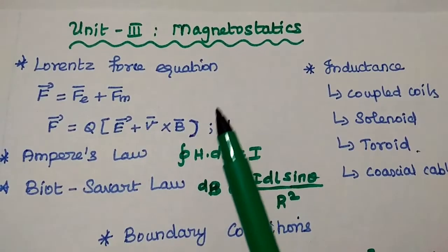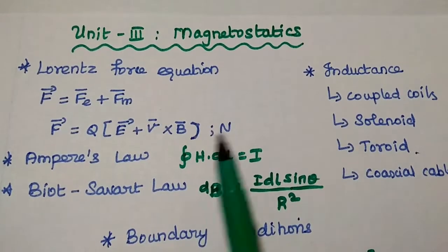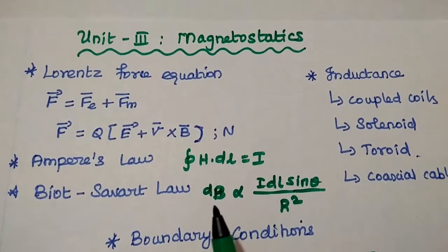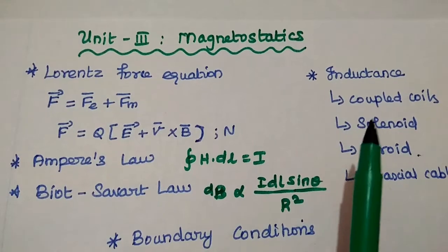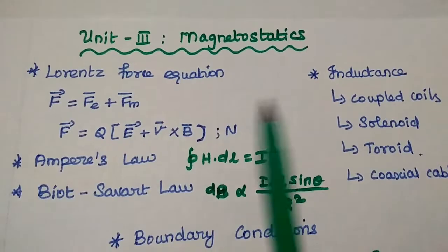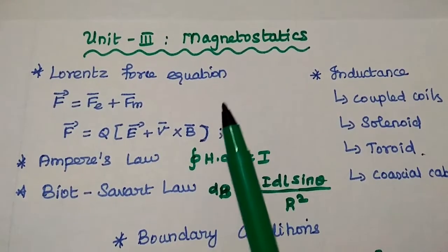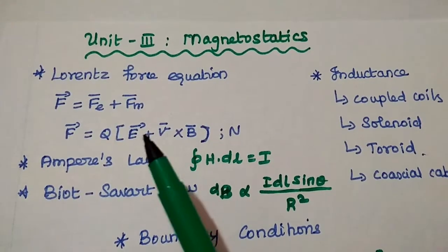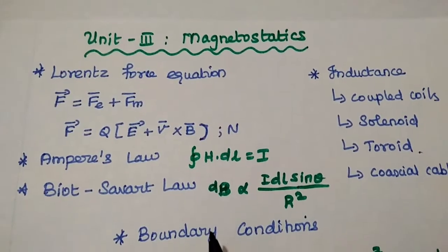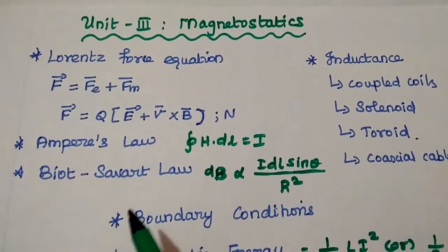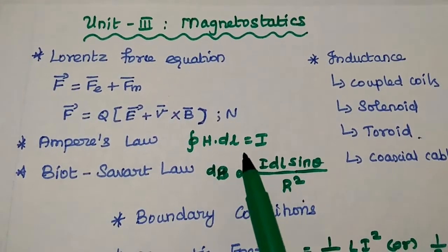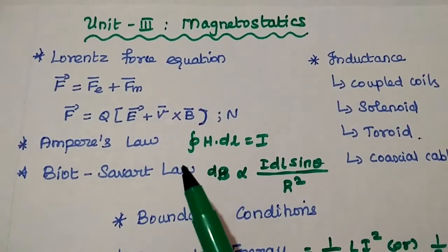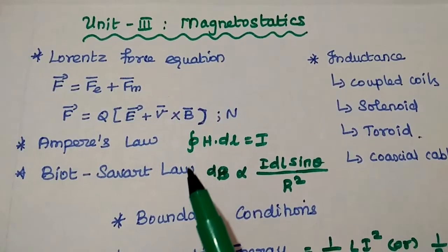The third unit is all about magnetostatics, divided into two halves. The first half covers the Lorentz force equation, Ampere's law, Biot-Savart law, and boundary conditions for magnetostatics. The Lorentz force equation states F equals Q times (E plus V cross B). Ampere's law gives the integral of H dot dL equal to the total current enclosed. Ampere's law and its applications are very important — questions may ask to state the law and explain its applications.